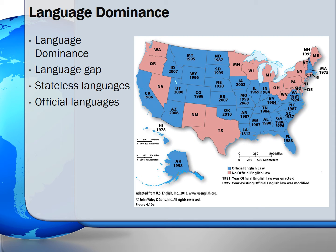Linguistic dominance does not automatically equal the largest amount of speakers in a language, but economic and political power does, as is the case with English. Even though there are more Chinese-speaking people than English-speaking, English is still the dominant language mainly because it is spread throughout the world. Chinese, on the other hand, is more concentrated in a smaller area.